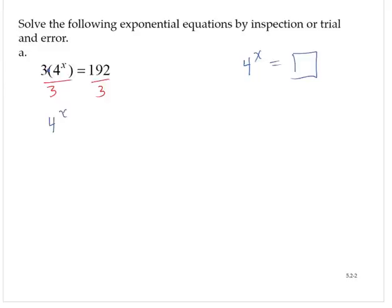So that would give me 4 to the x is equal to 64. Now, by inspection, I know that 4 to the third is 64. And so therefore, x is equal to 3.